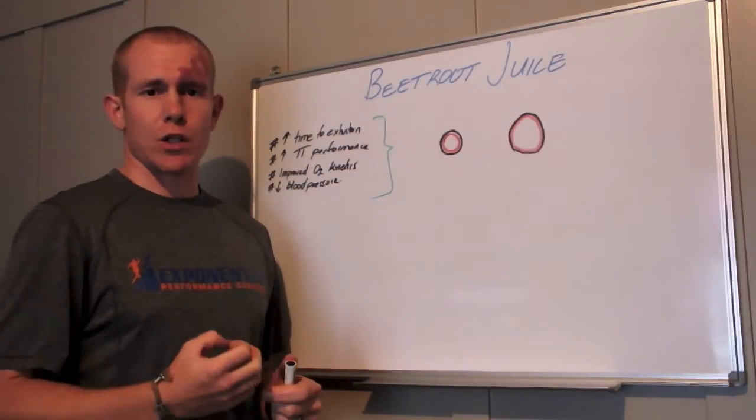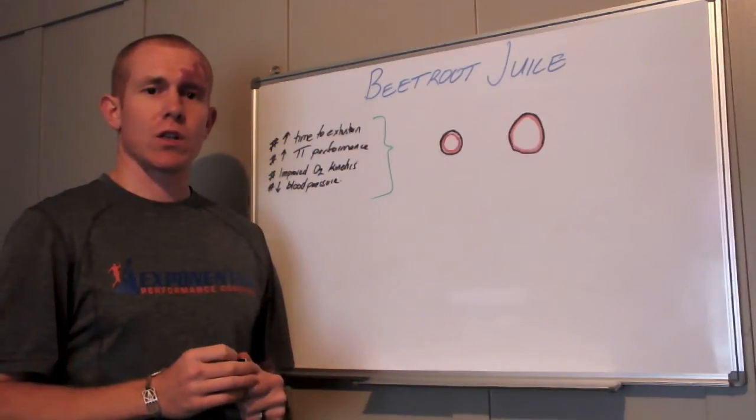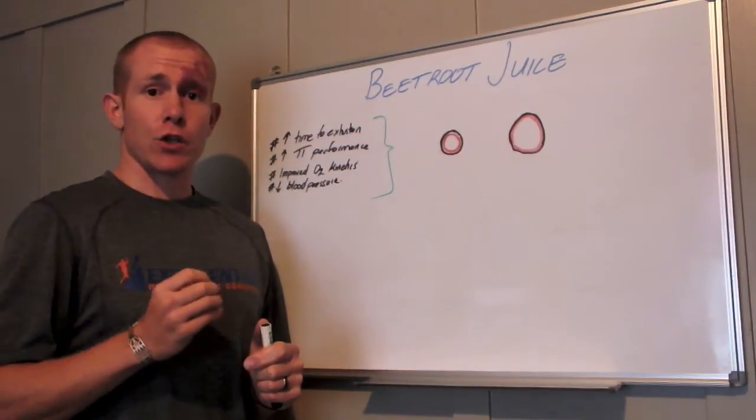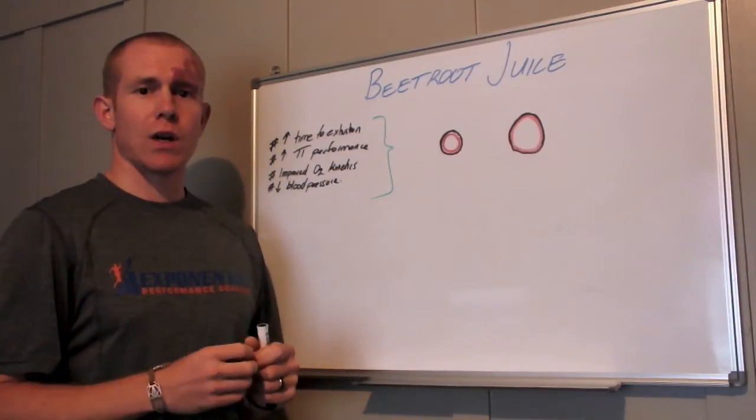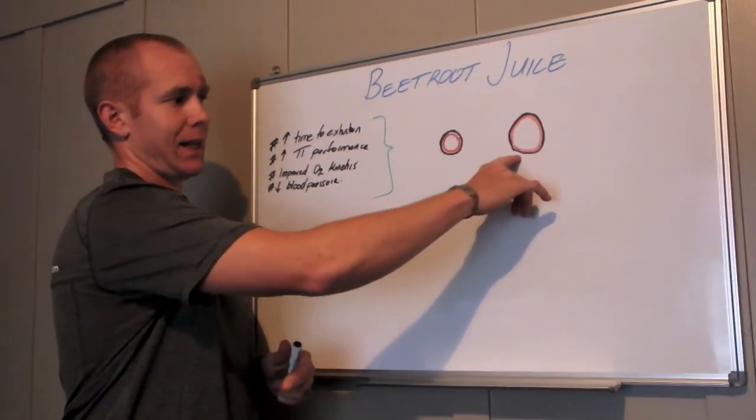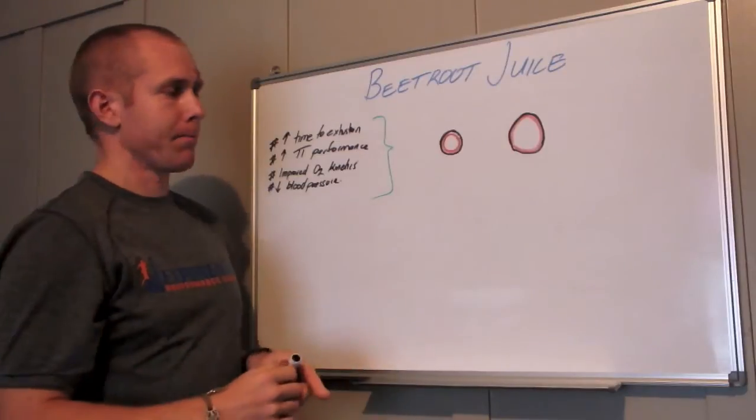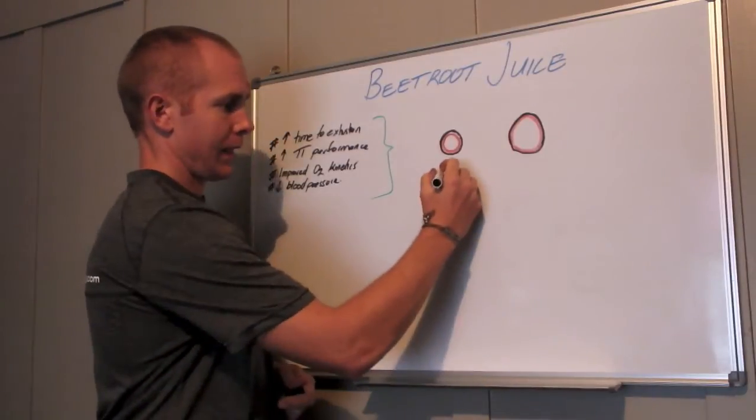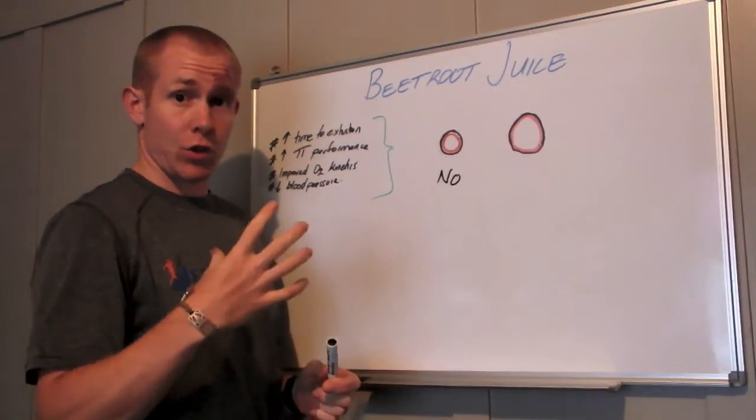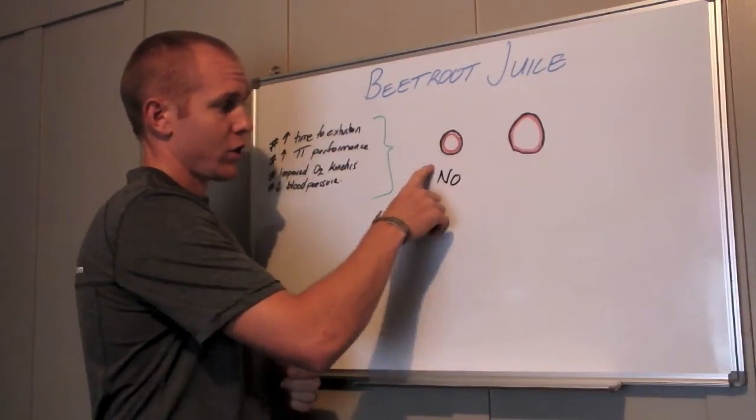So nitrate is the raw product required to make nitric oxide, and nitric oxide is one of your body's main vasodilators. A vasodilator makes your blood vessels relax and dilate so they become bigger. What happens is the more nitrate you have consumed, the more nitric oxide can be produced.